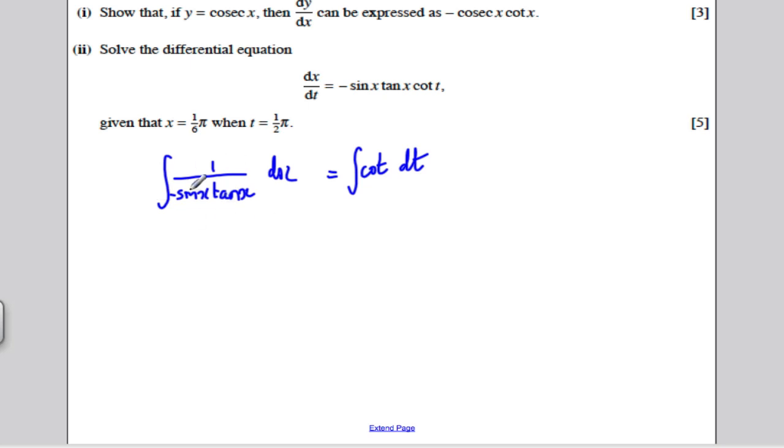And I would integrate both sides. OK, well, this thing here, if I just think about this, this is simply minus cosec x cot x dx, the integral of. And this thing here is the integral of cos t over sine t with respect to t.